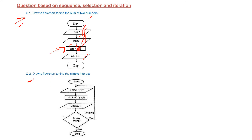The next example is drawing a flowchart to find simple interest. We start, enter P, R, T, then compute interest = P × R × T / 100, and display it. Then a decision diamond checks whether the user requires more — yes or no. If yes, we go back and repeat the process. If no, we stop.